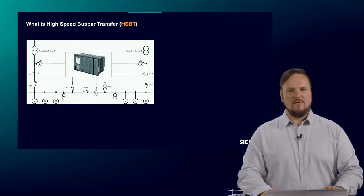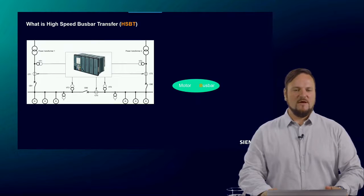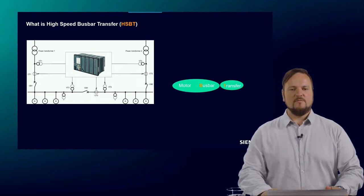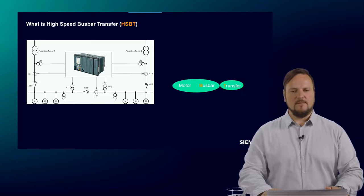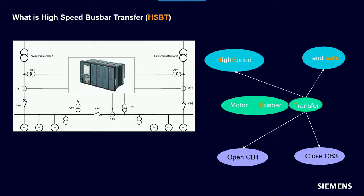Coming to my first slide, we talk about the high-speed bus bar transfer — HSBT device. That means we have a motor bus where inductive motors are connected, and we want to transfer the motor load from one incomer to the other. This requires opening CB1 on the left side and closing CB3 on the right side, but this interaction needs to happen in a very fast — high-speed — time. A second requirement for the HSBT is a safe transfer, meaning uninterrupted power supply for the whole factory.